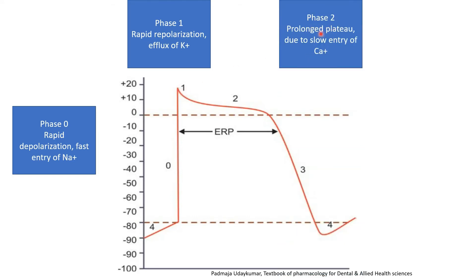Phase two is the prolonged plateau phase, which occurs due to the slow entry of calcium. The calcium channel opens, and slowly calcium enters into the cell membrane, producing the prolonged plateau phase.